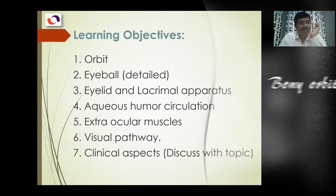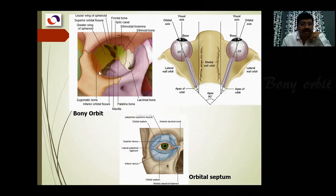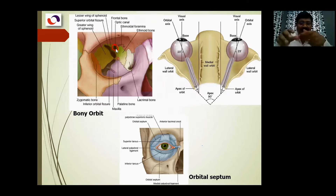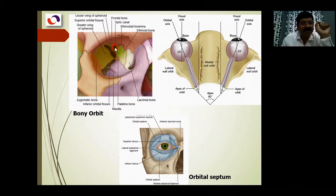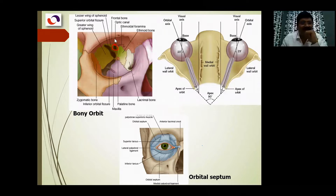Let's understand the objectives. The orbit is a pyramidal shape. The optic canal is present in the lesser wing of the sphenoid bone of the skull. If you see the skull and the orbit, you can find the optic canal from where the optic nerve and ophthalmic artery come to the orbit. This fissure is directed posteromedially and anterolaterally.